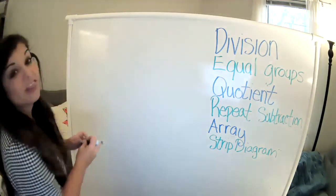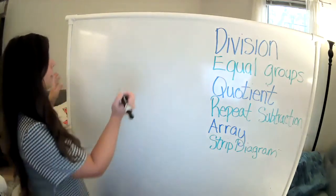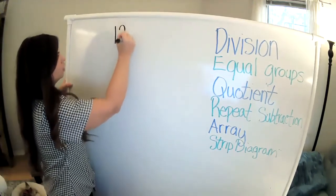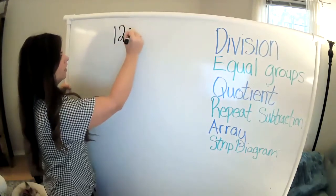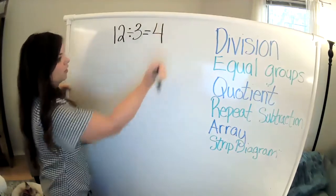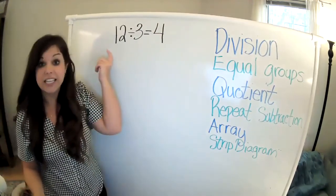For example, the first way that we can show a division problem is by doing something like this. 12 divided by 3 equals 4. This is the division equation.